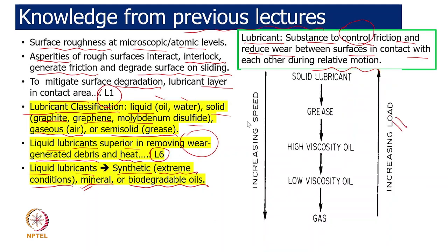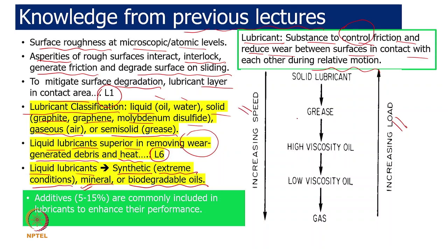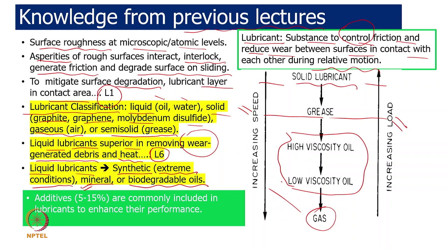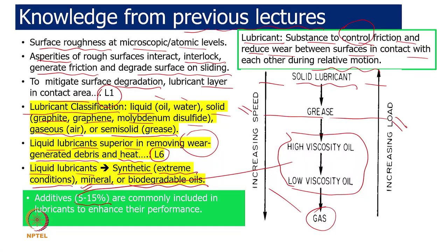Lubricant selection depends on relative speed and load. Very high load with low speed favors solid lubricants; intermediate load and speed favors grease; negligible load with very high speed favors gaseous lubricants. In between, we choose low or high viscosity oils. Today, viscosity alone is not sufficient criteria, so we add additives — typically 5 to 15 percent — and even 0.1 to 0.2 percent additive additions can significantly change performance, so selecting the appropriate additive is critical.